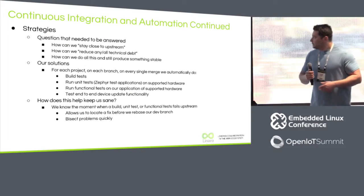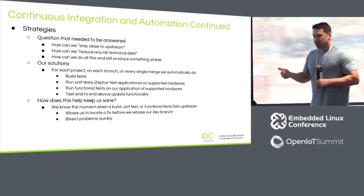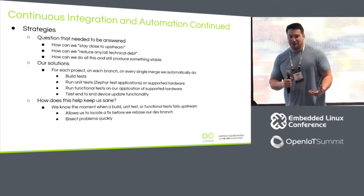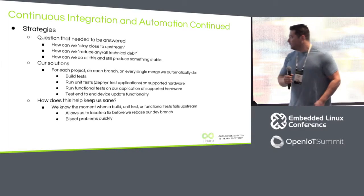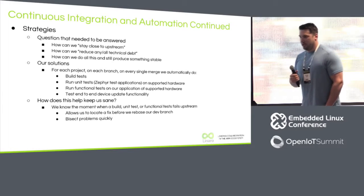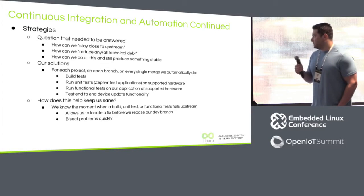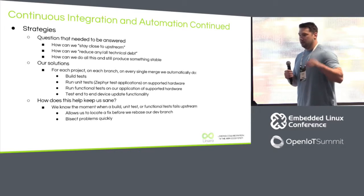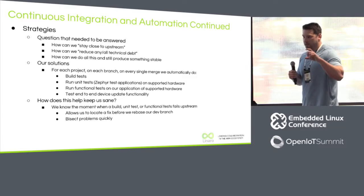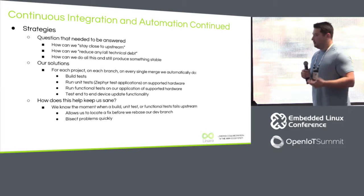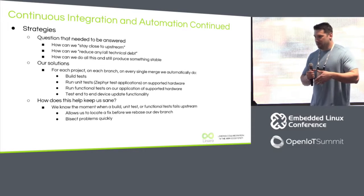The strategies we use answer: how do we stay close to upstream, reduce technical debt, keep our patch debt small, and still make something that works? Our solution is to build and use automation as much as possible. We build all the tests, run unit tests for applications on supported hardware, run functional tests on our application — we actually flash it onto devices, check that it comes up, and test the end-to-end story. This helps us detect problems because they're just going to be there, so it's better to detect them early so it's not a surprise. We were looking to rebase on RC2, did some testing, and found a regression where five times out of six our devices update fine, but when jumping to the next slot the application hangs.